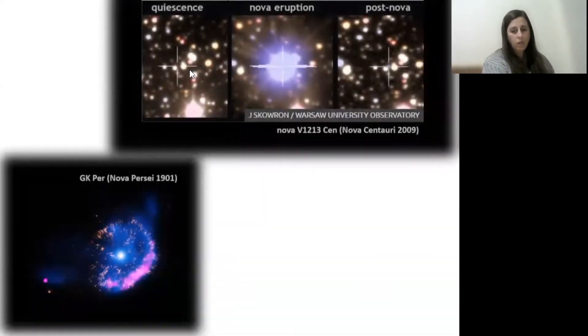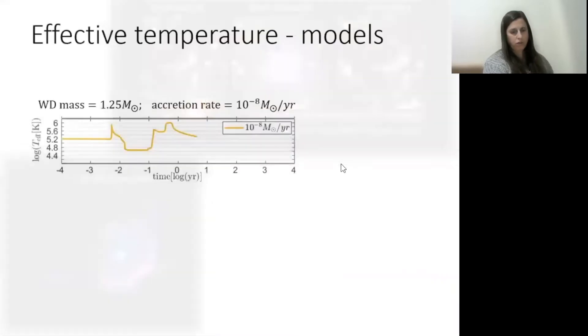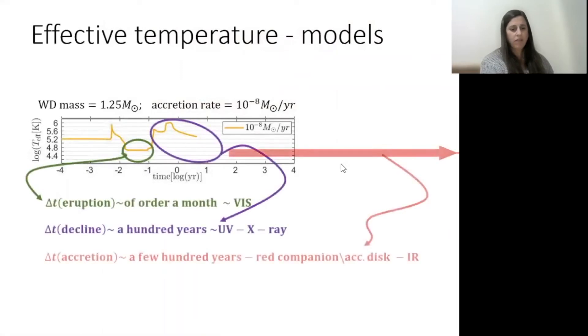Eventually, the ejection stops and the white dwarf slowly returns to its pre-eruption state. At this point, accretion can start again. So basically, a cycle is complete. Here's an example in visual: there's an eruption, a before picture, and a much after picture. So there's three phases: accretion, eruption, and decline. They have very different effective temperatures and time scales. This means that different bands would be suitable for observing at different epochs.